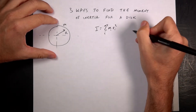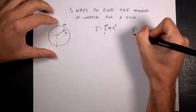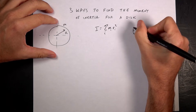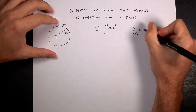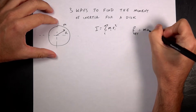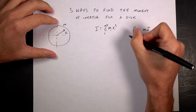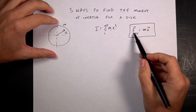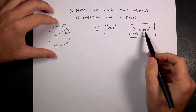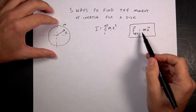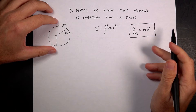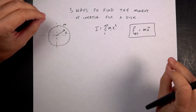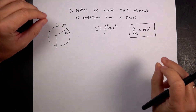We have this equation: F-net equals mass times acceleration. Newton's second law — this is the relationship between force and acceleration, and this property of mass that tells you how difficult it is to change the motion of an object.